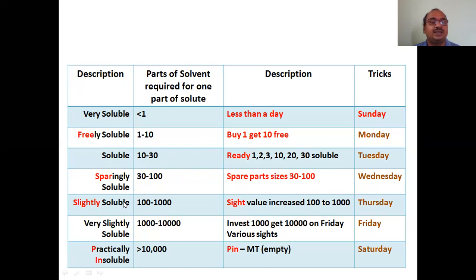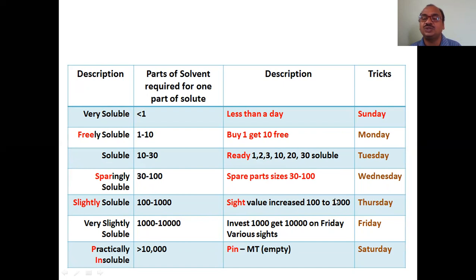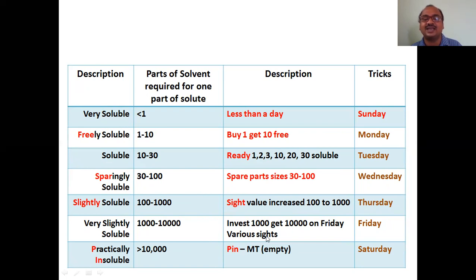For 'slightly soluble,' think of 'site value' — you invested 100 rupees on Thursday and with growth it became 1000 rupees. So slightly soluble is 100 to 1000 parts. For 'very slightly soluble,' think of Friday — you invested 1000 rupees and it became 10,000 rupees. So very slightly soluble is 1000 to 10,000 parts.